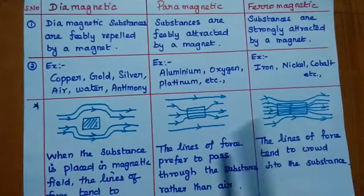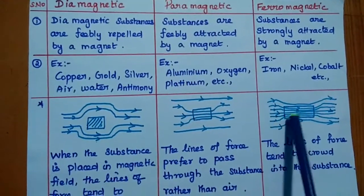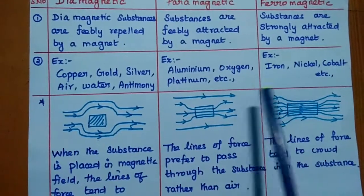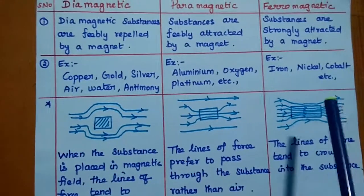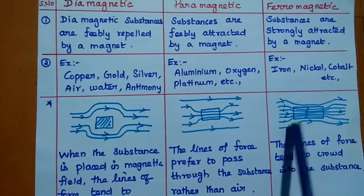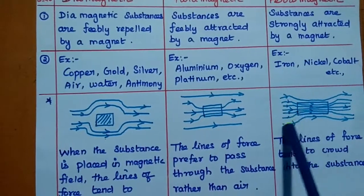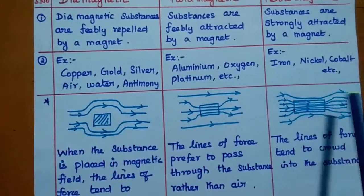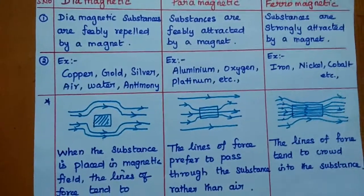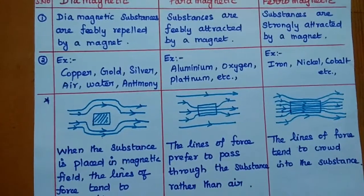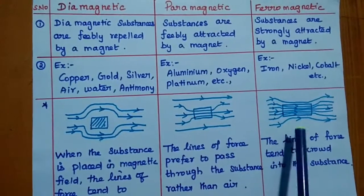In the case of ferromagnetic material, when we place an iron rod or nickel in an external magnetic field, the lines of force tend to crowd into the substance — all the lines are attracted towards it. That is why ferromagnetic materials are said to be strongly attracted by a magnet. So to summarize: diamagnetic is feebly repelled, paramagnetic is feebly attracted, and ferromagnetic is strongly attracted.